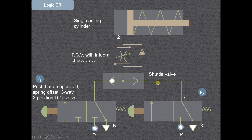There are two valves, valve V1 and V2. Both these valves are push button operated, spring offset, three-way two-position direction control valves. Both are shown in the right envelope mode where the pressure port P is blocked and therefore there is no action. Both these valves are in the off position.